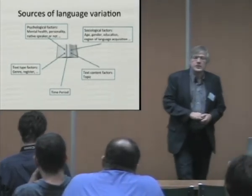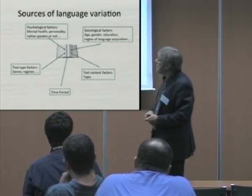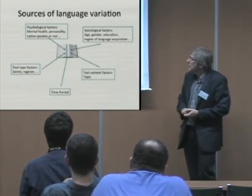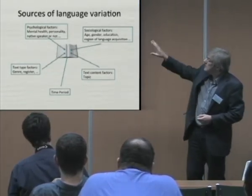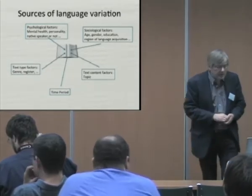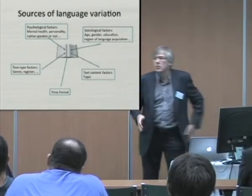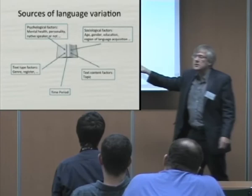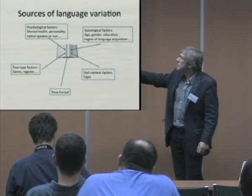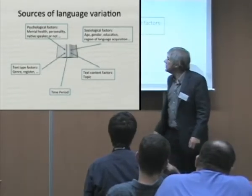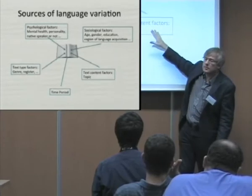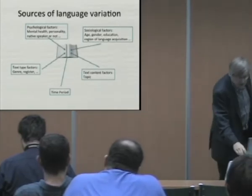As linguists, we know there's a lot of variation in language and variation comes from many different sources. There are text factors like genre and register. There's the topic that also determines variation in the text, the time when the text was written, and then all the psychological and sociological factors that are the subject of social psychology, social language psychology, and social linguistics. The problem from a machine learning point of view is that all these sources of variation occur at the same time and you have to untangle them. That's, for example, the cross-genre problem.